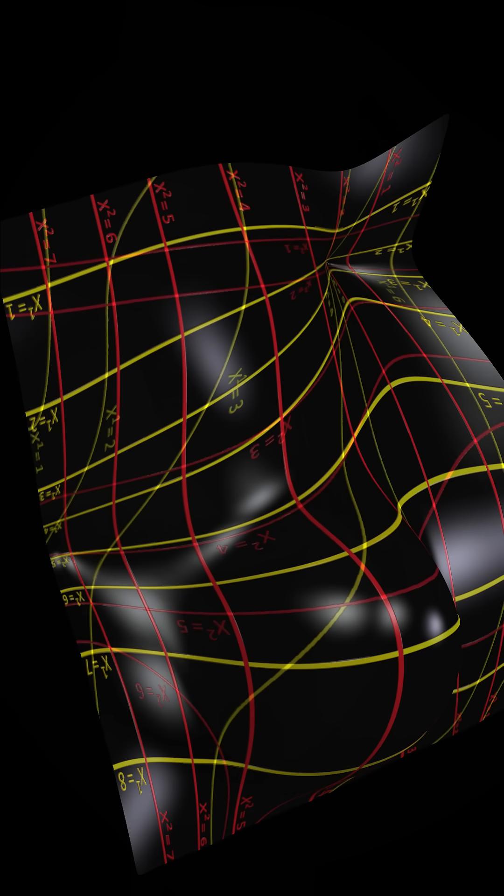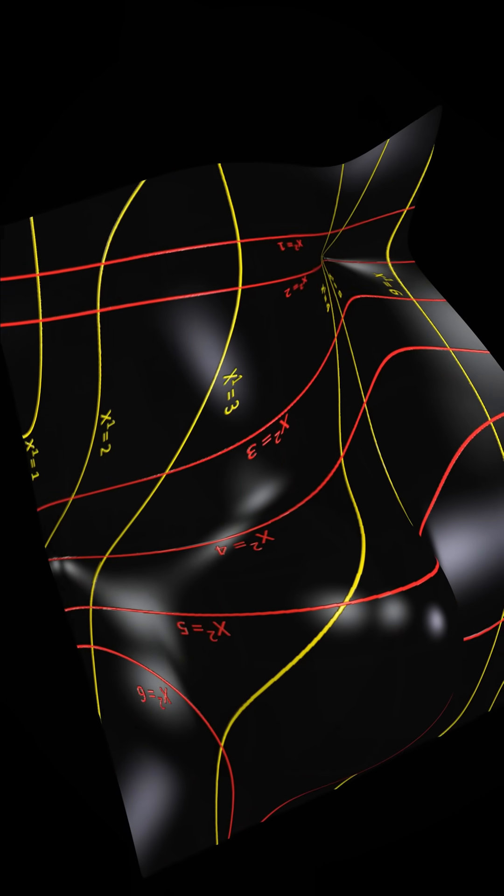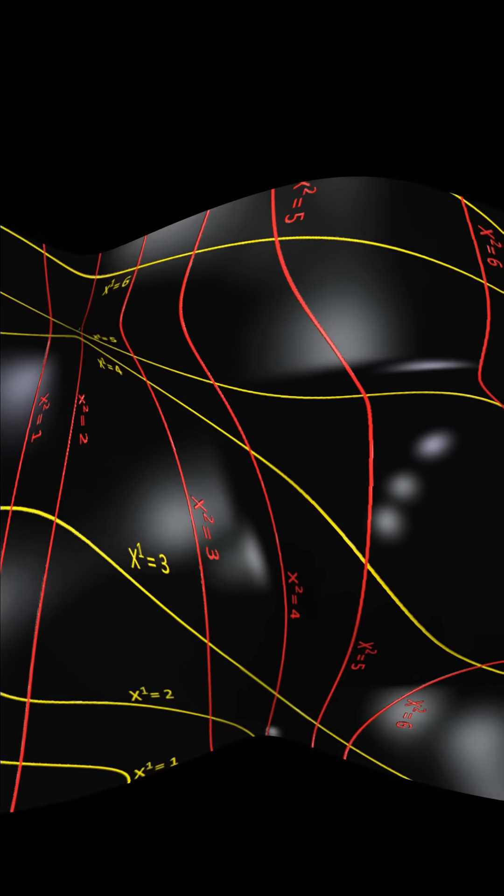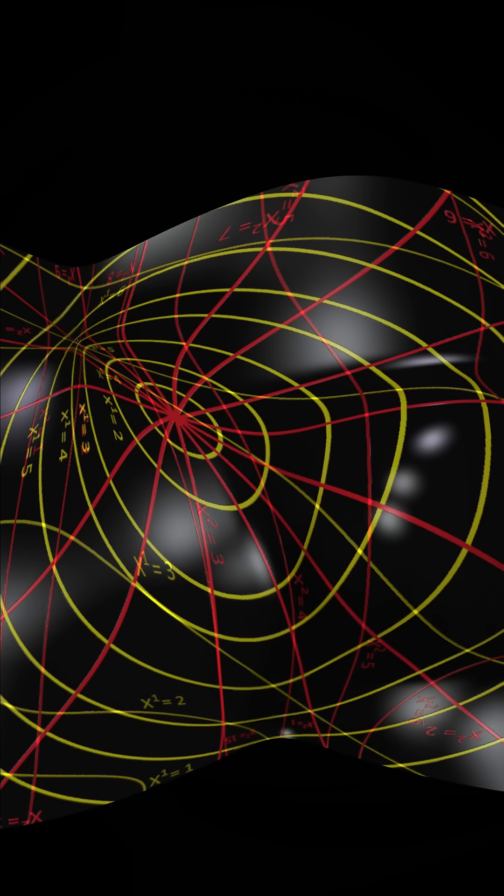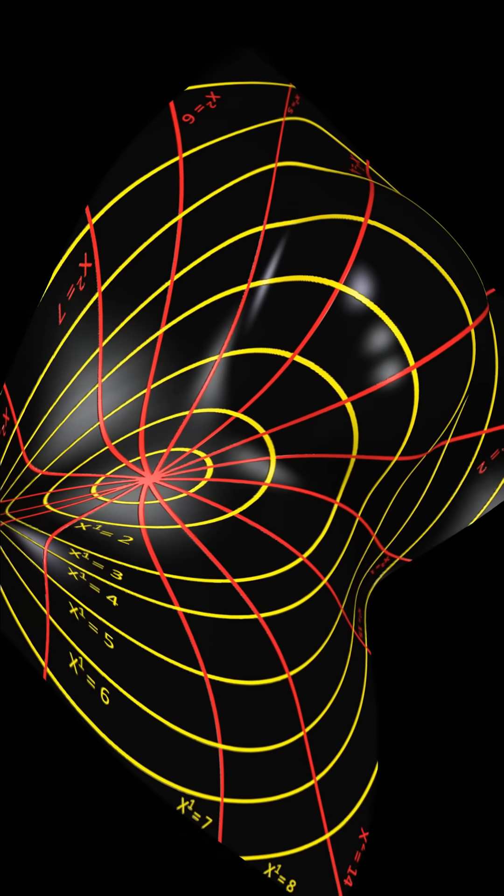Einstein's field equations remain valid no matter what coordinate system we choose. None of the coordinates necessarily need to correspond to the time coordinate of any observer. Curved coordinates can also be used to describe flat space-time.